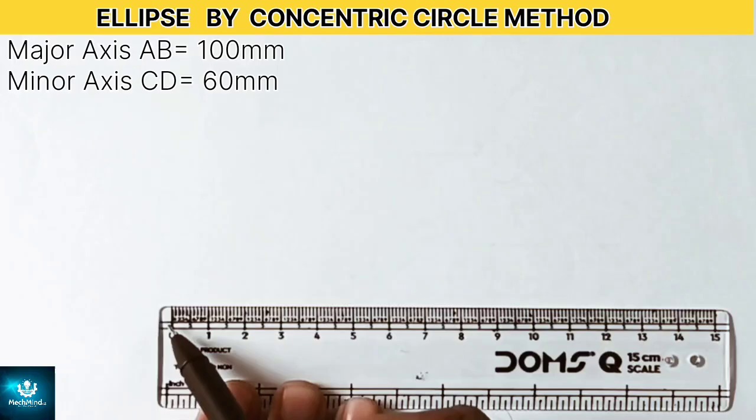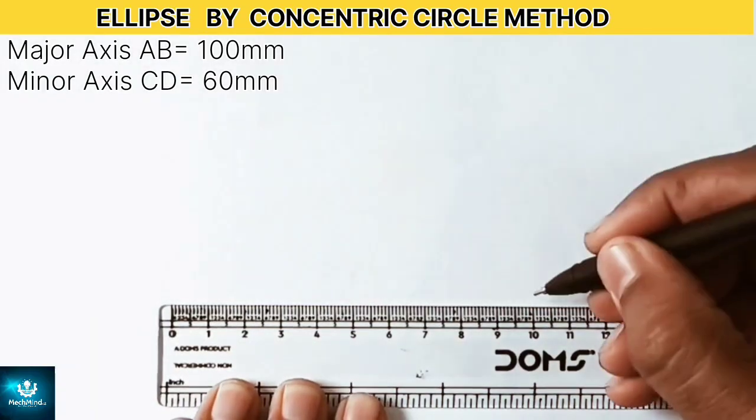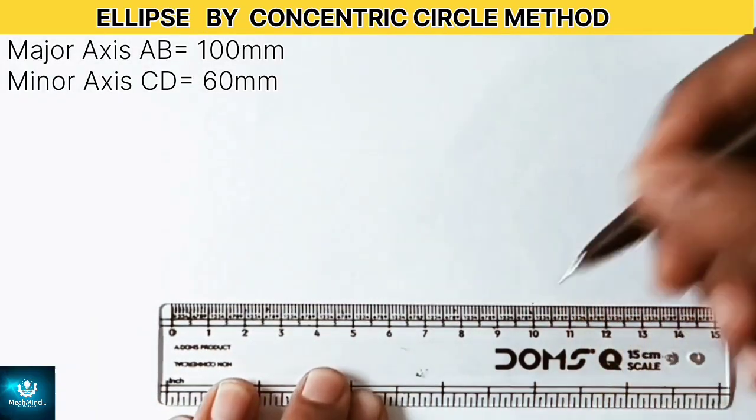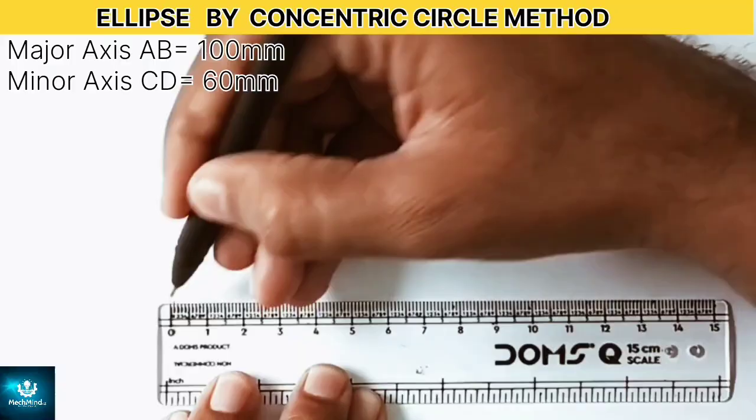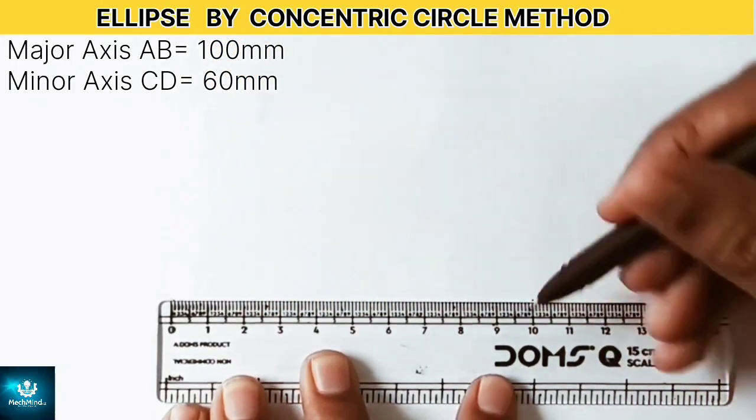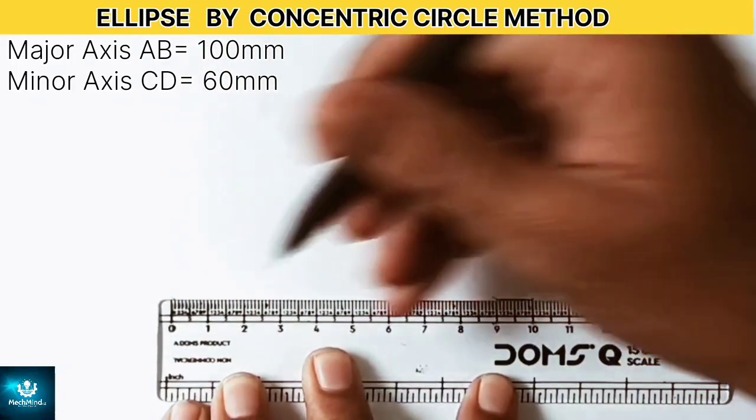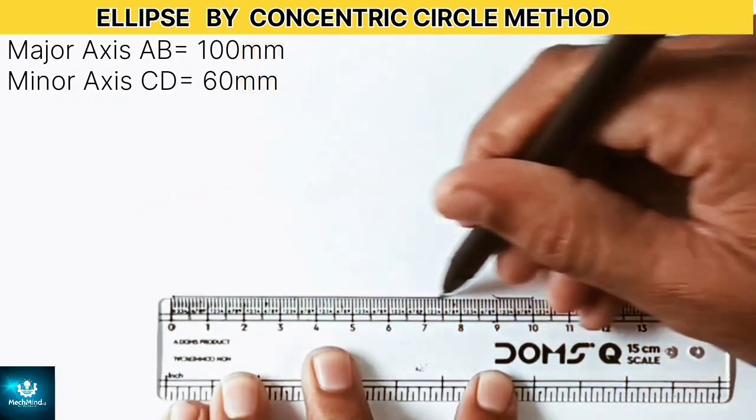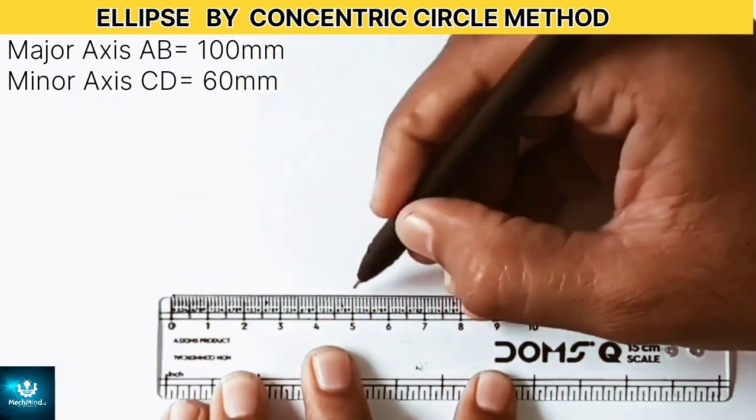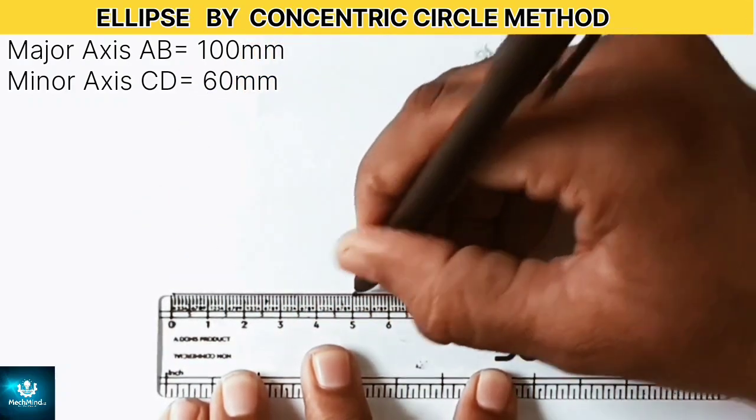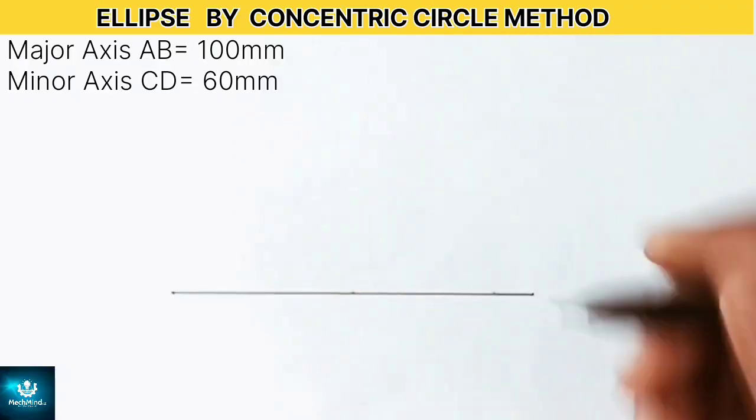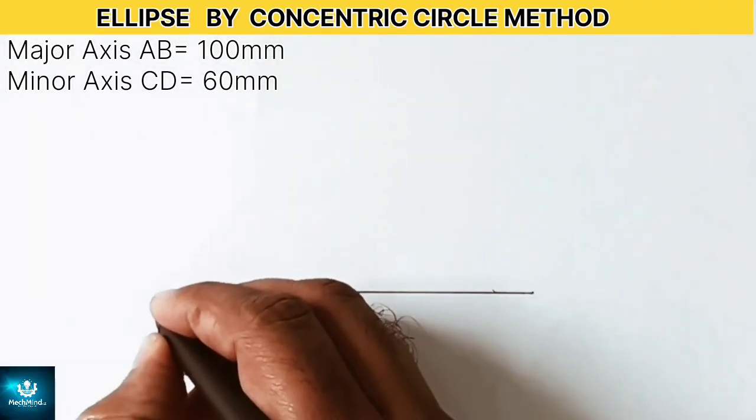First draw a horizontal line of 100 mm. This will be the major axis of an ellipse and mark its midpoint. Name the endpoints as A and B.